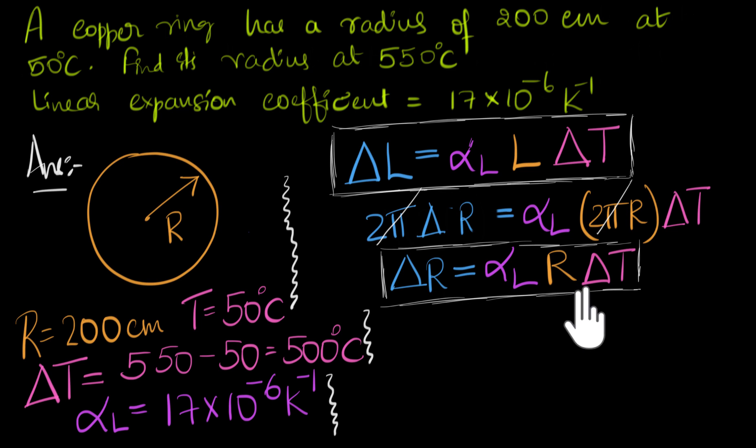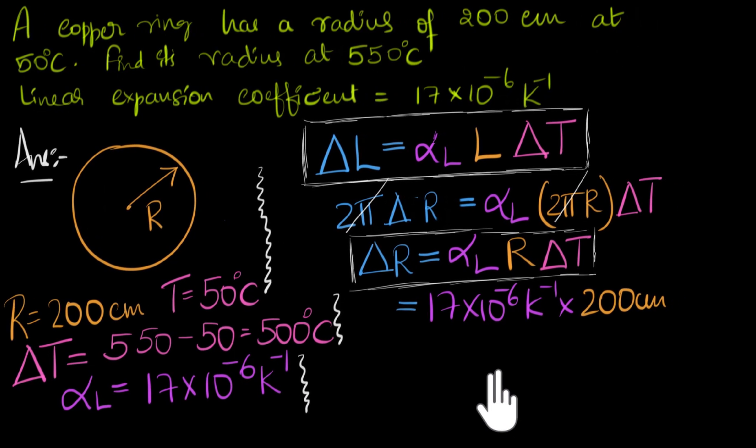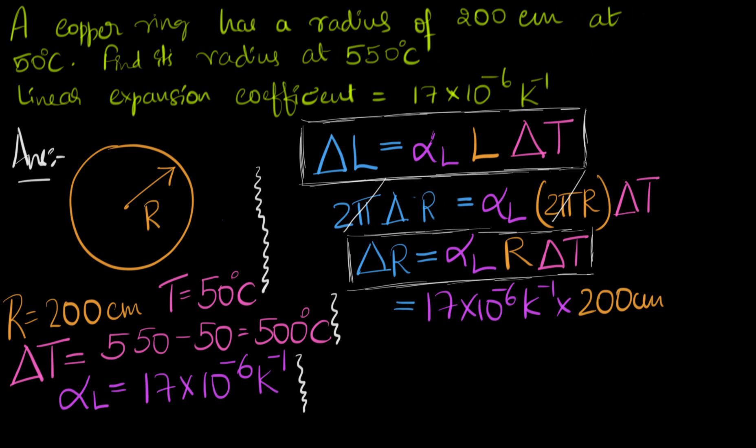So having said that, let's go ahead with this problem. Now notice that we know what alpha L is, we know what R is, we also know what delta T is. So we just have to plug in and figure out delta R. So whatever follows is just algebra. So alpha L is 17 times 10 to the power minus 6 Kelvin inverse times R, R is 200 centimeters, 200 centimeters, times delta T, delta T is 500 degrees Celsius.